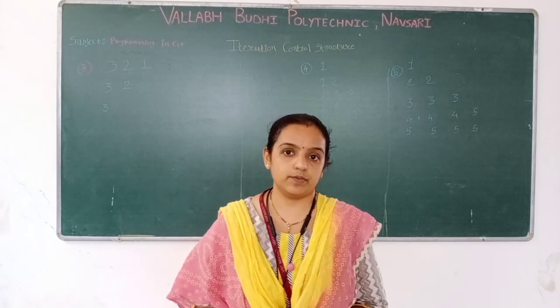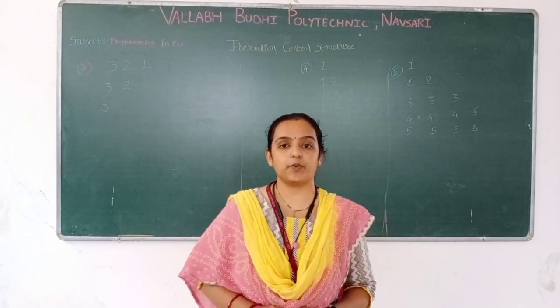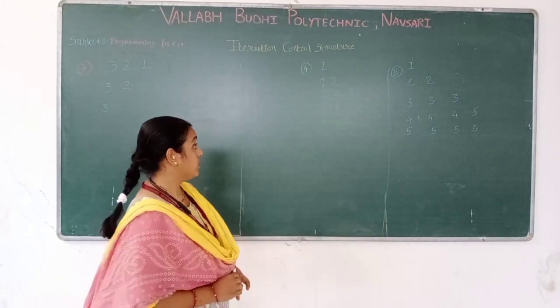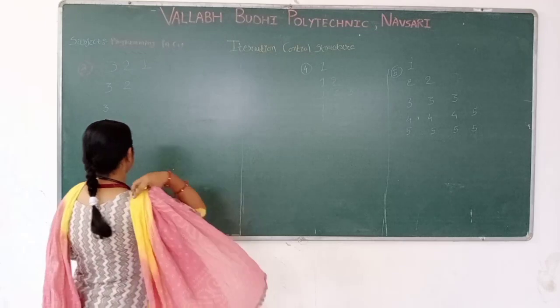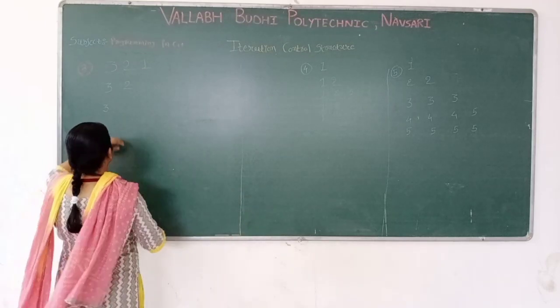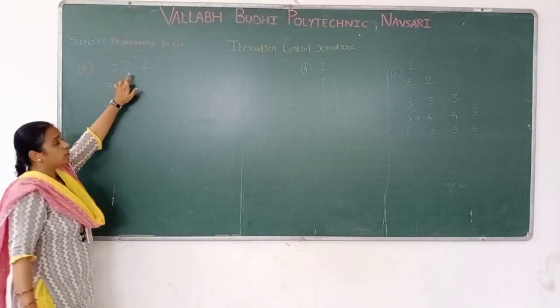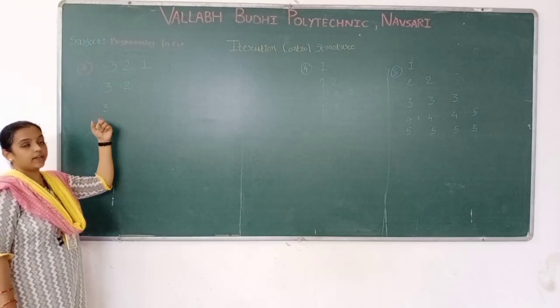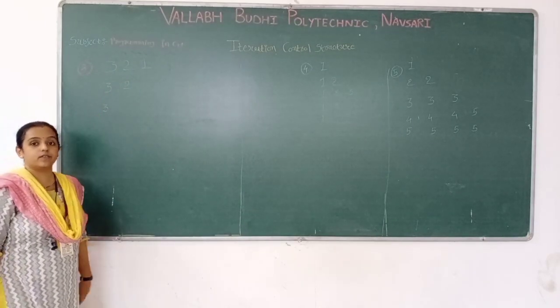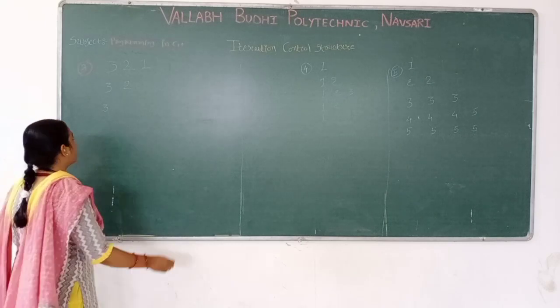Now, our next program. This has 3 patterns. The first pattern is: in row 1 we have 3, 2, 1. In the second row we have 3, 2. And in the third row, it is just 3.